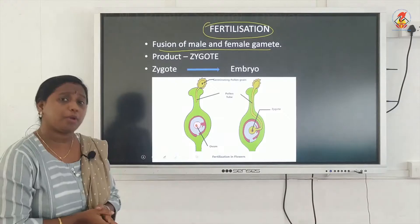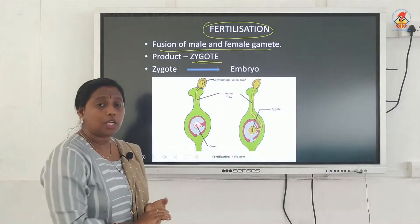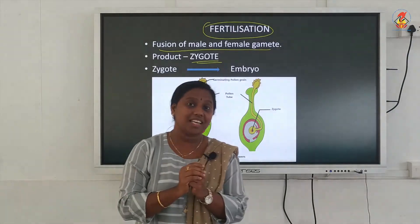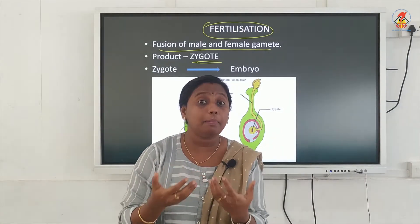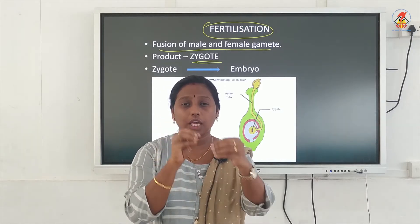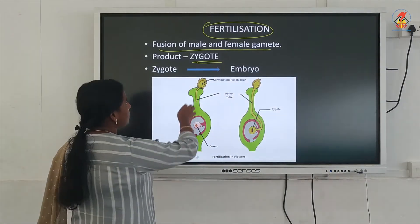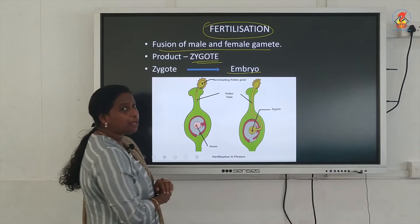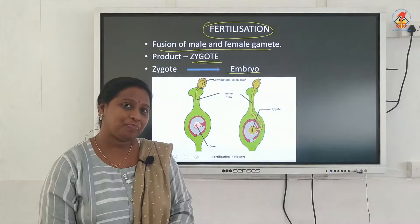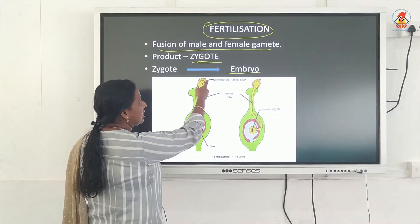The newly formed cell, or the product of fertilization, is called the zygote. The zygote will slowly develop into an embryo within the seed. The ovule will become the seed — inside the ovule this zygote will develop into an embryo. And what will happen to this embryo? The embryo will develop into a small tiny plant, into a seedling.